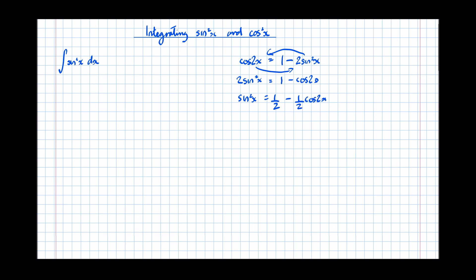So now we've got something we couldn't integrate — the sin squared x — and we've replaced it with a different form that we can integrate. So that's equal to the integral of one half minus one half cos(2x) dx, which equals one half x minus one quarter sin(2x). The integral of cos is sin, then divide by the differential of the bracket, which is 2, so that becomes one quarter sin(2x), plus c.